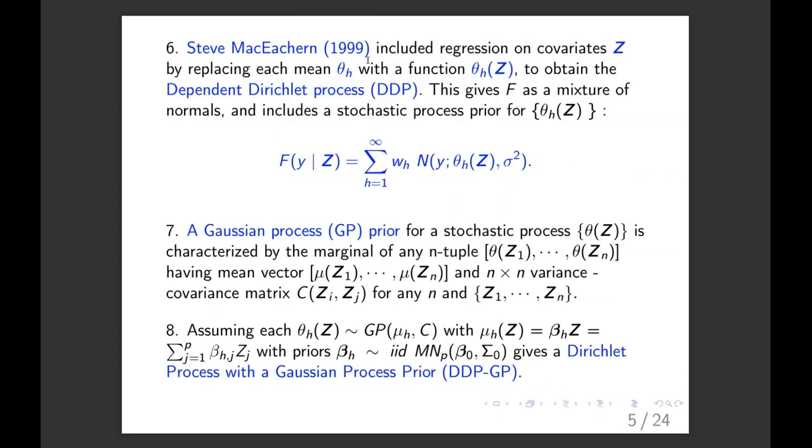So Steve McEachern 20 years ago had this idea, well, how do you extend this to do regression? And all he did was say, I want the mean of the, say if F is the CDF of the distribution, given some covariate vector Z, it replaced the theta H with a combination. If you see down here, it's just the usual thing you see in regression. And so instead of the Dirac delta function, you have a normal, and then you say the mean of the normals is a function of the covariates, now you have a mixture of normals that themselves are regression functions.